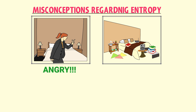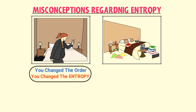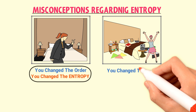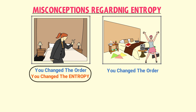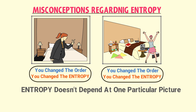The correct example is: suppose you are angry and enter a clean room, throwing all the things around — you change the entropy of that clean room. Similarly, if you enter a dirty room happily and place everything in its respective position, you change the entropy of that dirty room. Entropy doesn't depend only on one particular picture or absolute state of an object.